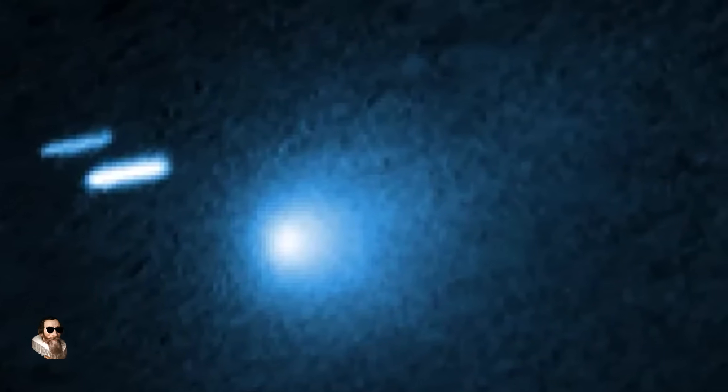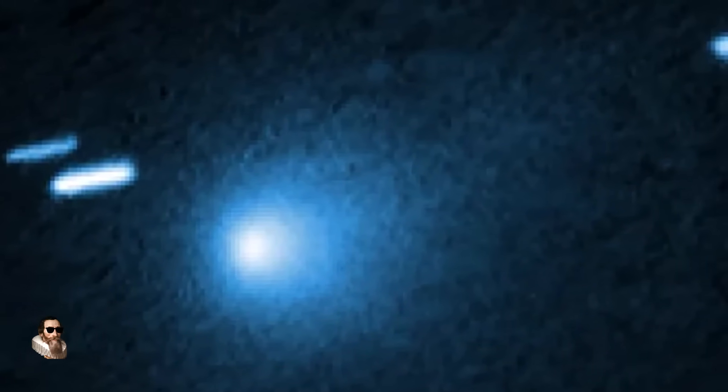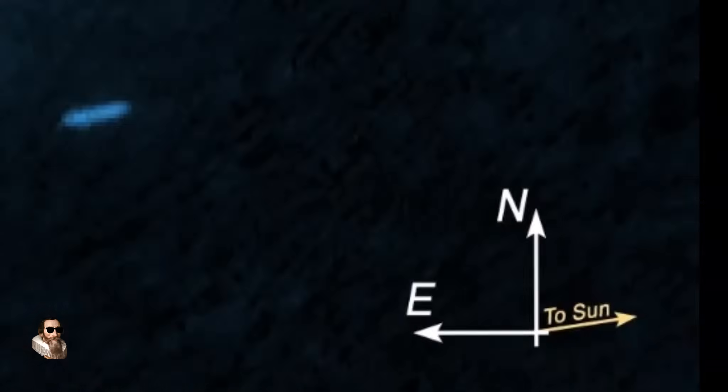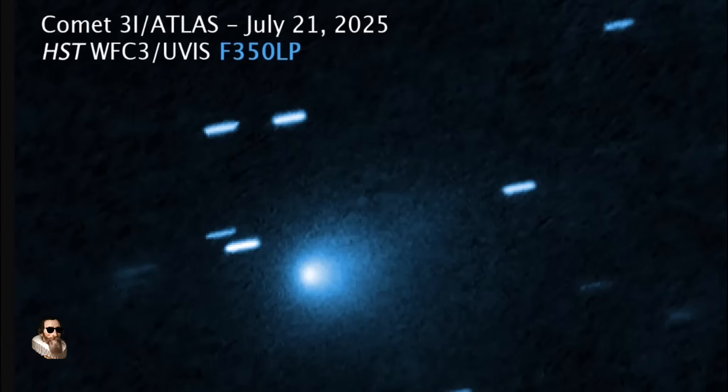The image shows a glow of light and this comes ahead of the motion of 3i Atlas pointing towards the sun, and there is no evidence for a bright cometary tail in the other direction.